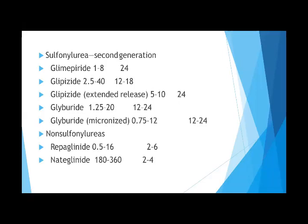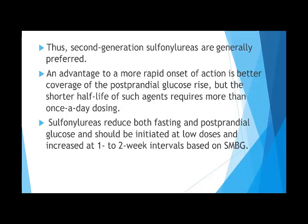The second-generation sulfonylurea glimepiride, brand name Amaryl or Getrel, has a dose range of 1 to 8 mg with effects lasting 24 hours. These medicines are usually given to normal-weight or underweight type 2 patients. The starting dose is 1 mg, gradually increased to 2, then 3, then 4 mg. If more than 4 mg is required, it is given in two divided doses. Glipizide is another second-generation option. Non-sulfonylureas include repaglinide and nateglinide.